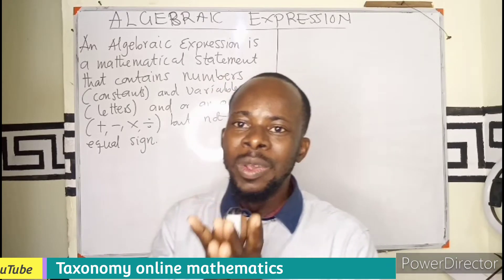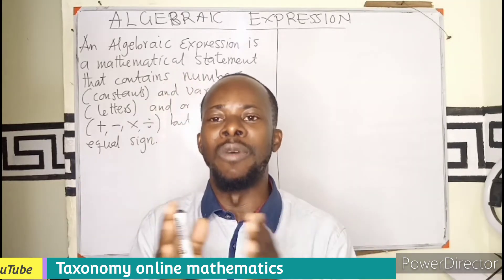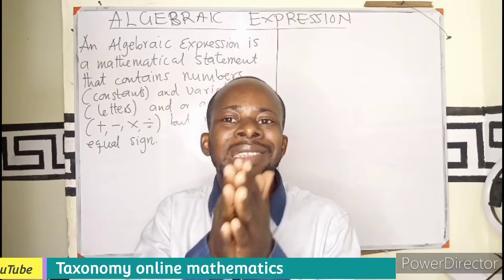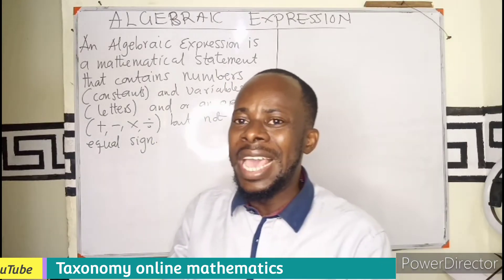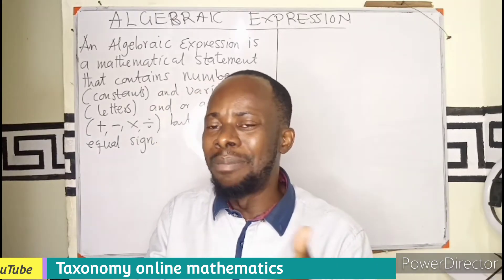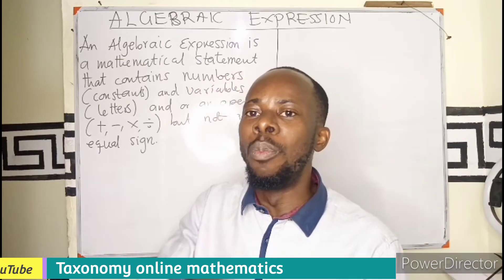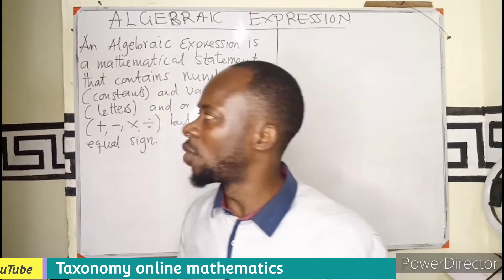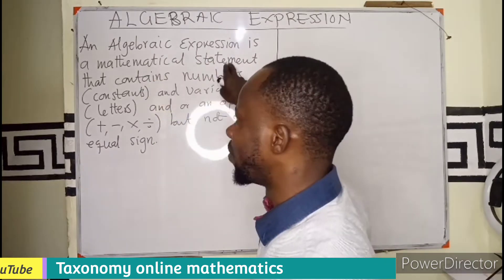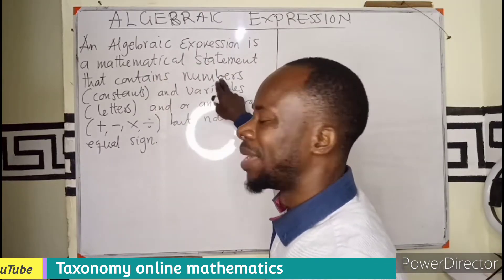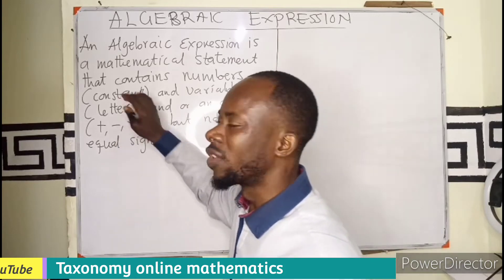So to say an algebraic expression, it is just a combination of mathematical statements that contain numbers and variables, combined with operators. So we are saying that it is a mathematical statement that contains numbers. These numbers are referred to as constants.